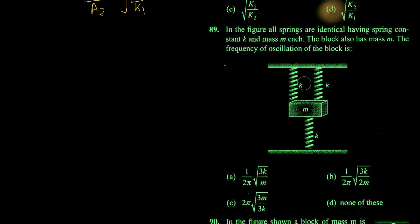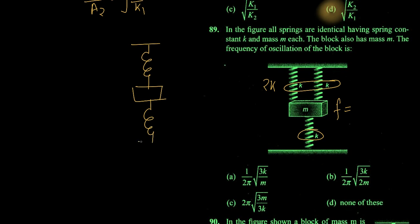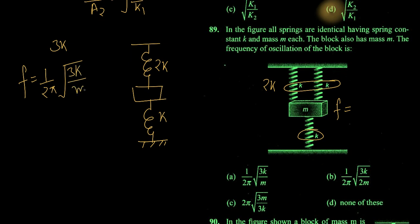Next situation: a mass block has three identical springs. We need the frequency of oscillation, so we find k_net. Two springs are in parallel giving 2k, and then the third spring is also in parallel with the block. So the upper ones give k and k in parallel = 2k, making the total effective spring constant 2k. Your answer is option A.